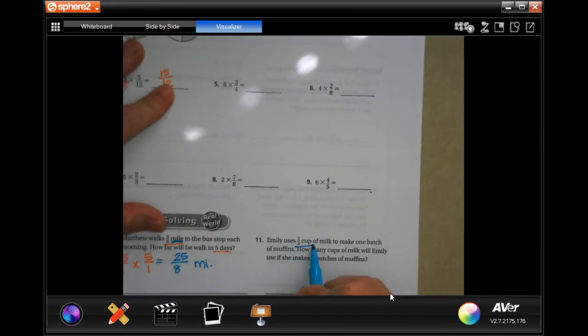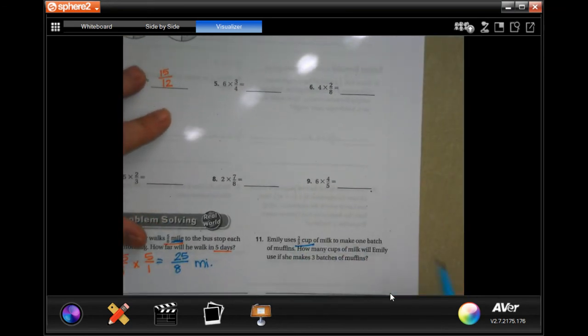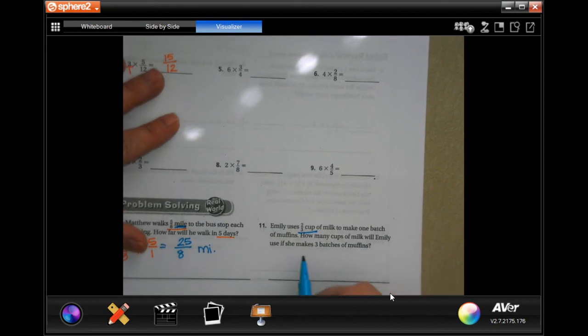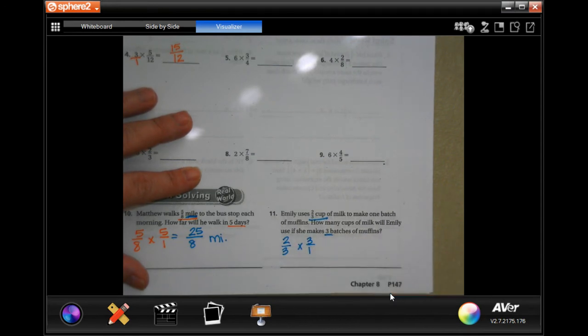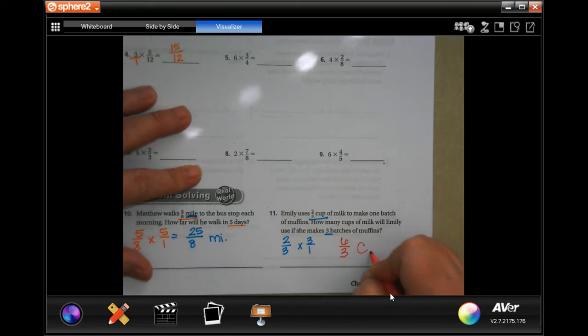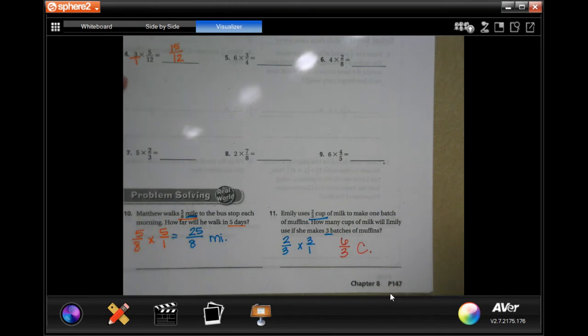Emily uses two and a third cup of milk to make one batch of muffins. How many cups of milk will she use if she makes three batches? So, two-thirds times three, and I'm going to put that three over a one. So, two times three, six. Three times one, three. And we're going to put a C for cups. Pretty easy, guys.